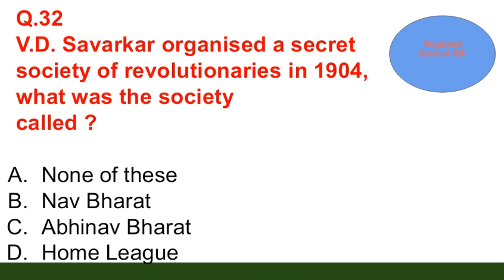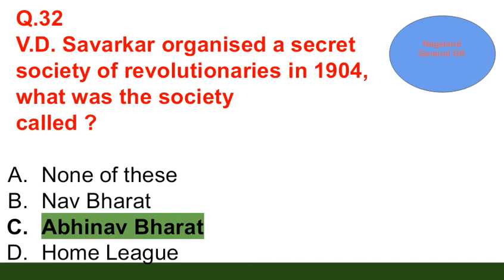Question number 32: V.D. Savarkar organized a secret society of revolutionaries in 1904. What was the society called? Option A: none of these; option B: Nav Bharat; option C: Abhinav Bharat; option D: Home League. The correct answer is option C — Abhinav Bharat.